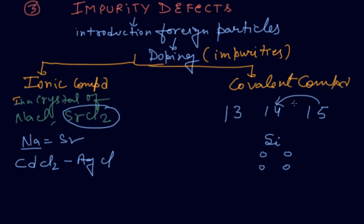When group 15 is introduced into group 14, it is called an n-type semiconductor, and a defect arises. If we take phosphorus, it has five valence electrons. Four electrons are neutralized by the silicon, and one extra electron remains. Due to that extra electron, electrical conductivity arises. This is the covalent compound n-type defect.